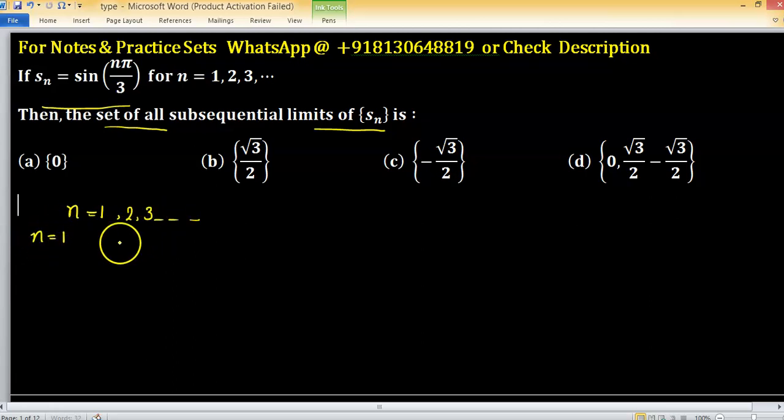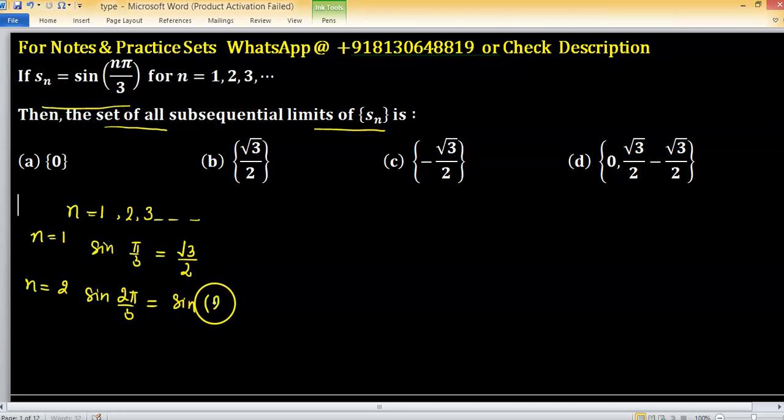When you put n equals to 1, we have sine pi upon 3, which means sine 60, and the value of sine 60 is root 3 by 2. When n equals to 2, sine 2 pi upon 3 means sine 120, and sine 120 you can write as sine 90 plus 30. It will equal minus cos 30, and cos 30 is root 3 by 2. So the second term is minus root 3 by 2.